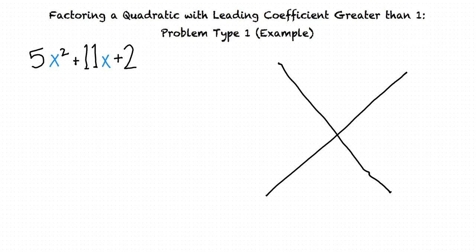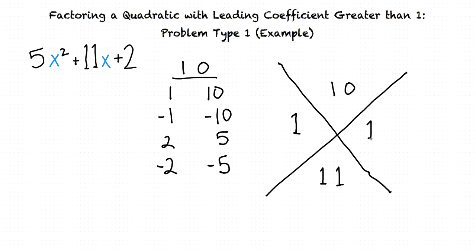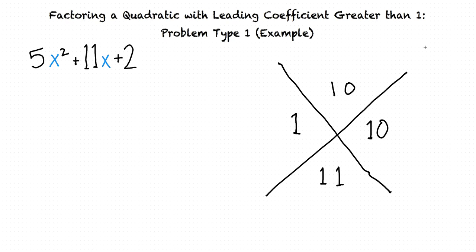Now let's try the same problem using a different technique using an X to organize our work. In the top of the X we multiply our first and last coefficients: 5 × 2 = 10, which goes on top, and 11 goes on the bottom. We then find two numbers that multiply to 10 and add to 11. The pairs that multiply to 10 are 1×10, −1×−10, 2×5, or −2×−5. Only 1 and 10 add to 11, so we choose those.